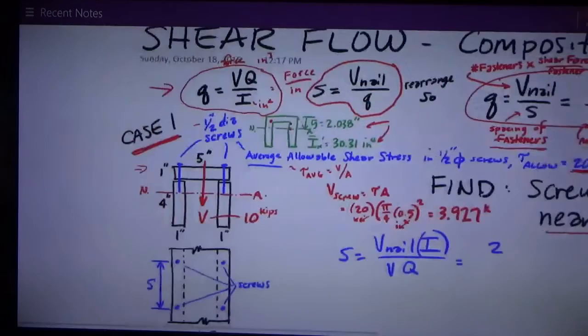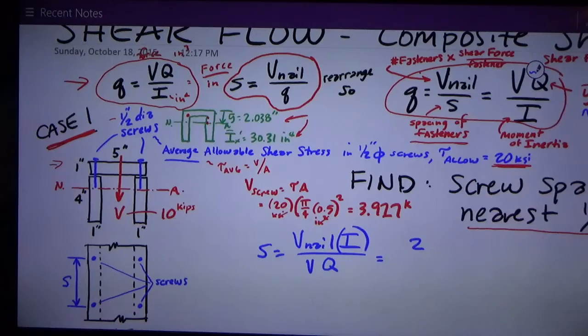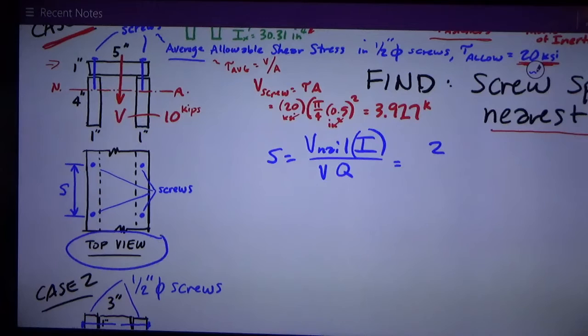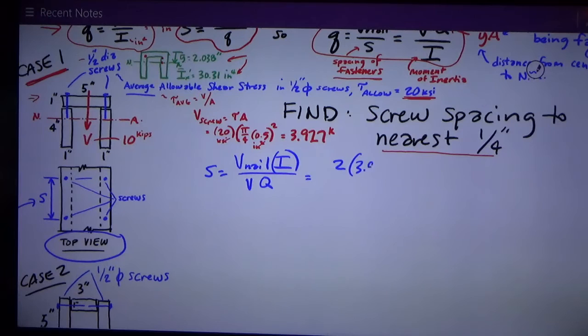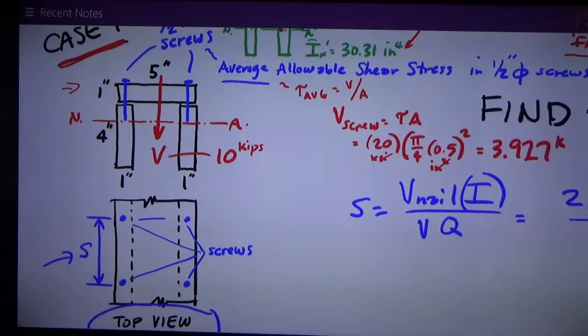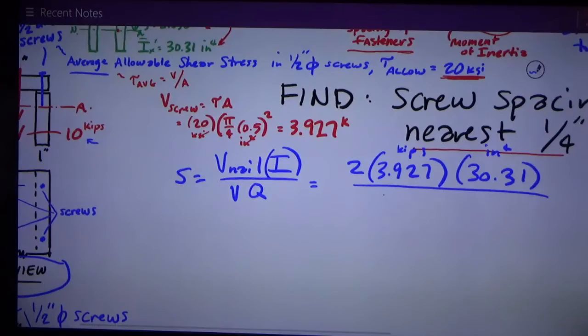Okay, V nail is the number of fasteners times the shear force per fastener. So that's going to be 2 because each board is fastened, the board on the top is fastened by 2 screws per spacing. Here, I have a little view of this from the top. If I look down on this beam, I'm going to see the longitudinal length of it, and every spacing S, I've got 2 screws. So the number of fasteners is 2, and the force per screw is 3.927. That's kips. I, I've already calculated it's for the composite section. In an earlier video, it's 30.31 inches to the fourth. V, I forgot to note, is 10 kips. That's the shear force on the section.